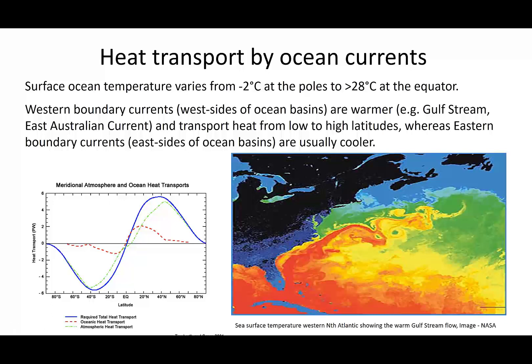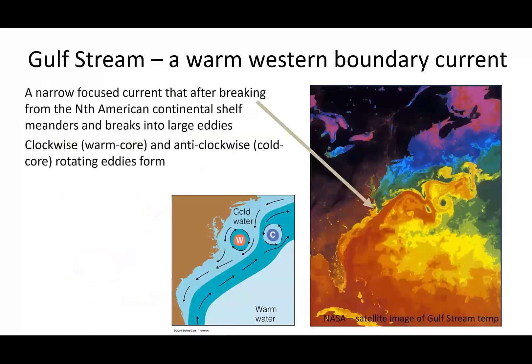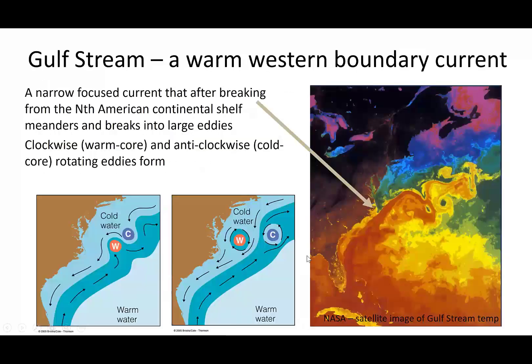As you've seen on the perpetual ocean video, these eddies are a very major feature of the circulation patterns within the surface ocean. The little animations on the left show how the Gulf Stream, once it breaks away from the continent, starts to meander, and then eventually those meanders break off and we end up with these isolated eddies that remain spinning.